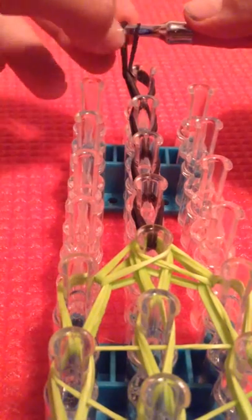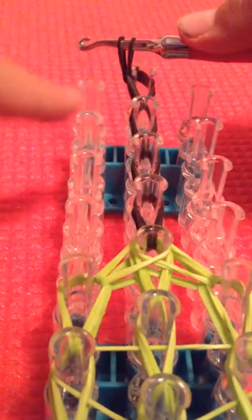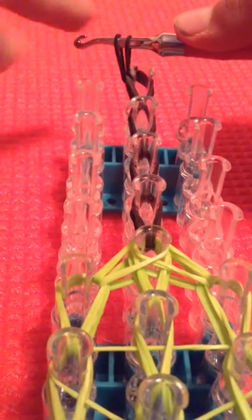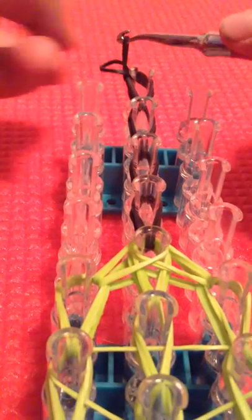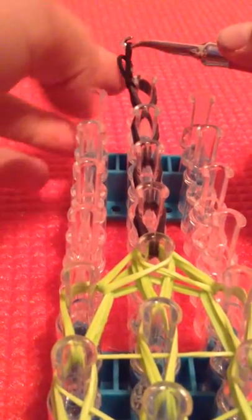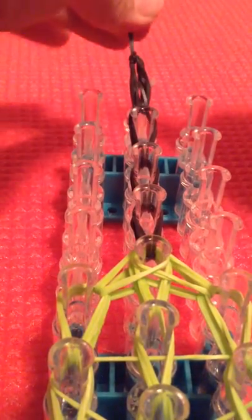Now you are going to take—the band should be placed like a V. You're going to take the one furthest away from the point of the hook, and you are just going to take it off of the hook. So it should be lying like this, and you are going to pull the one that is still on your hook nice and tight.